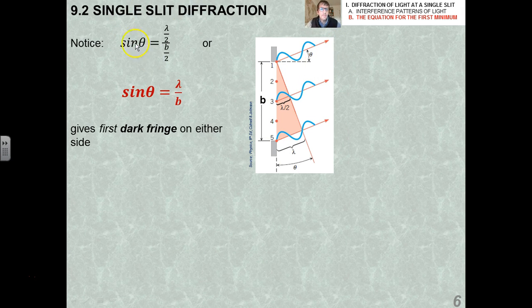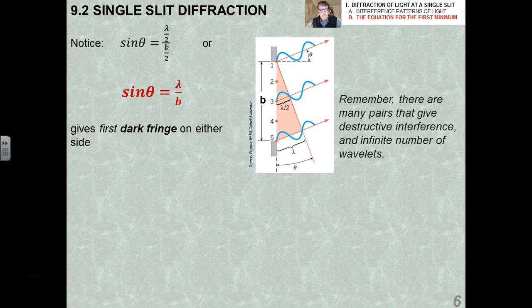So the condition for the first minimum is that the angle must make all the sources across the slit cancel out. Notice that the sine of theta, because sine is opposite over hypotenuse, we have that the sine of theta is lambda over 2 all over b over 2. Or in other words, the sine of theta is lambda over b, which is what you would get if you use the big triangle here.